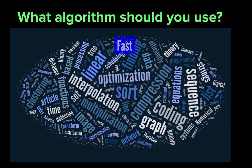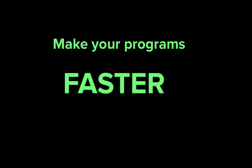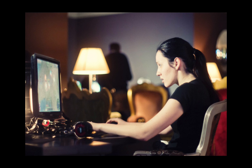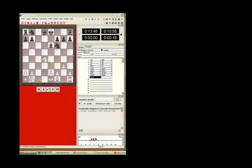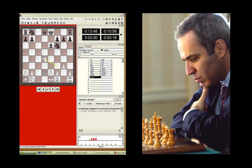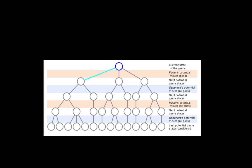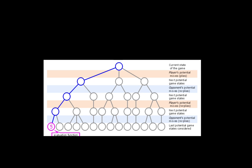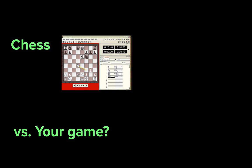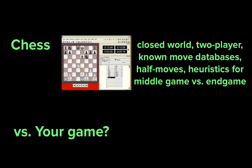If you know something about existing algorithms, you can save yourself some effort and make your programs faster by applying the right one. For example, let's say you're writing a game and you want the user to be able to play against the computer. Computer scientists have figured out how to write chess playing programs that beat the top chess grandmasters using an algorithm called Minimax Search Tree with Alpha Beta Pruning. If your game is similar to chess, then you might be able to use algorithms based on those techniques.